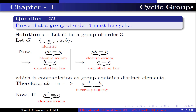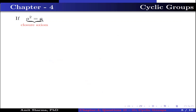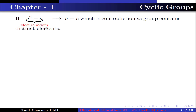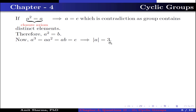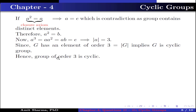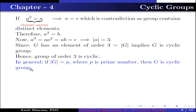Now by the closure axiom, if A squared equals identity this implies A equals A inverse, which is a contradiction since A inverse equals B. Again by the closure axiom, if A squared equals A this implies A equals identity, which is a contradiction. Therefore A squared equals B. Now A cubed equals A times A squared equals AB equals identity. This implies order of A is 3, since A is not equal to identity and A squared is not equal to identity. Since G has an element of order 3 equal to the order of G, G is a cyclic group. In general, if the order of G equals P where P is prime, then G is a cyclic group.